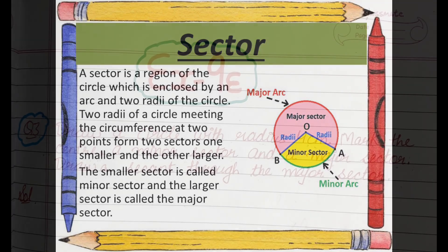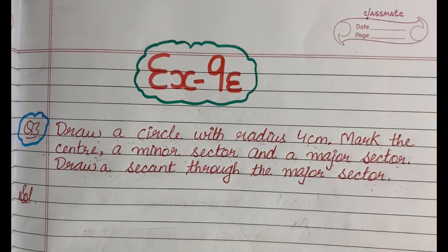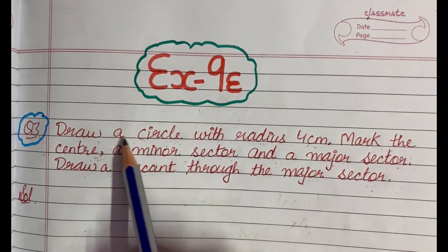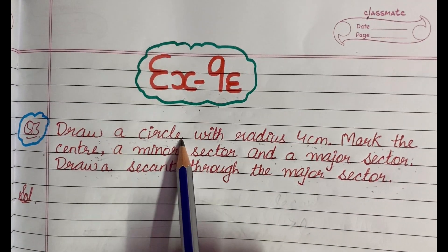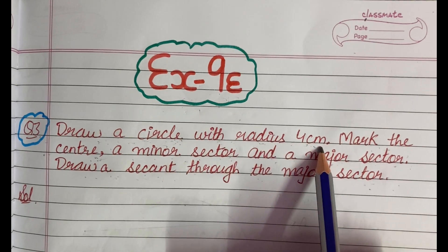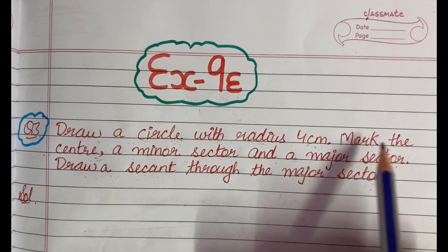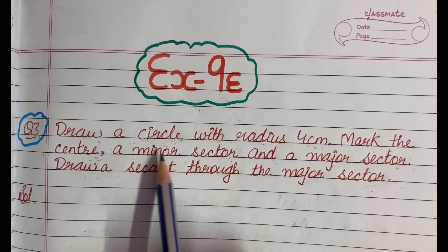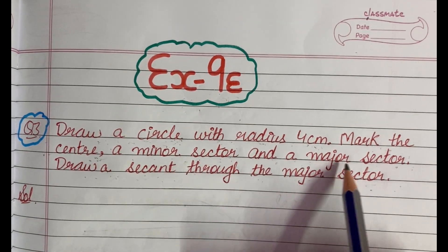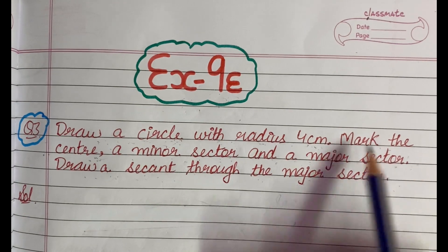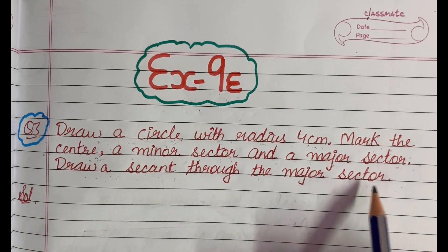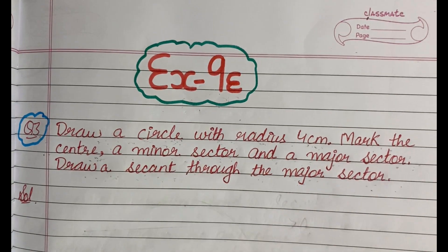Question number 3 of exercise 9E says: draw a circle with radius 4 cm. Mark the center, a minor sector, and a major sector. Draw a secant through the major sector.